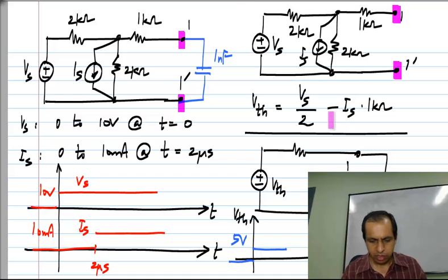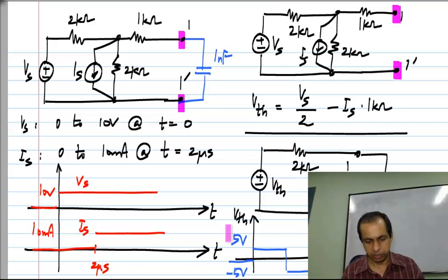And after t equals 2 microseconds, the contribution of Vs will be 5 volts, it is Vs by 2 and contribution of Is will be minus 10 volts. What happens is this will switch down and stay at minus 5 volts forever, because we have no other changes that are specified. All we have to do is still solve the same circuit, by the way the value of Rth between these two terminals again calculate it for yourselves and see that it comes out to be 2 kilohms. All we have to do is still solve the same kind of circuit as before, but with a slightly more exotic input.